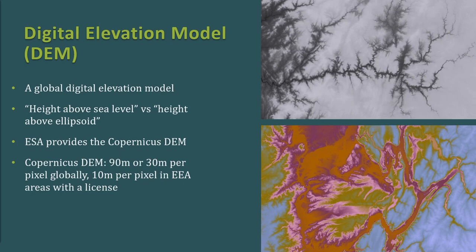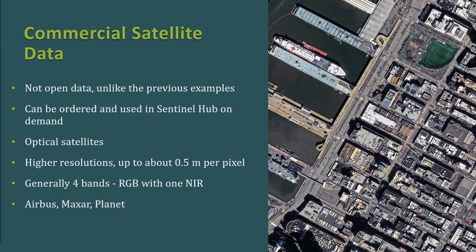The digital elevation model tells you the height above sea level or above an ellipsoid, and you can get both on Sentinel Hub — it is global. ESA provides the Copernicus DEM at either 90 or 30 meters per pixel globally, and you can get up to 10 meters per pixel in EEA areas with the appropriate license.